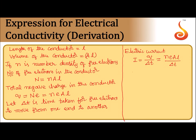Now, L divided by delta T is the time taken for electrons to move from one end to another due to the presence of the electric field. This is nothing but drift velocity Vd. Therefore, substituting Vd into the equation, we get I equal to n e A Vd. This is the expression for electric current.